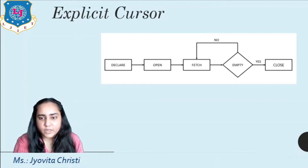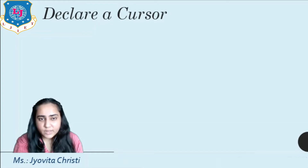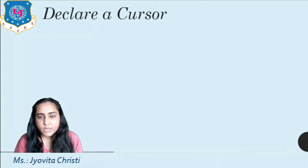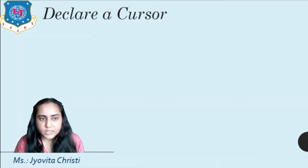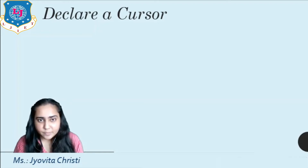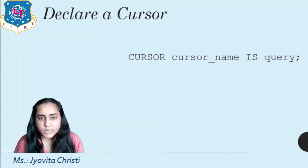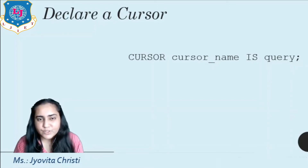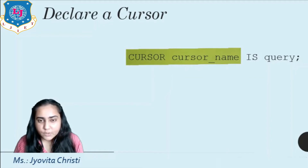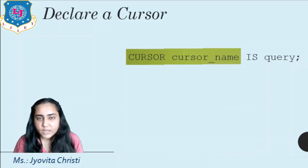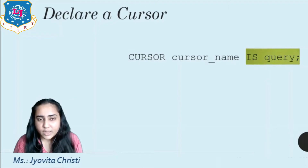Let's examine each step in detail. The first step is to declare a cursor. Before using the explicit cursor you have to declare it in the declaration section of the block. The syntax is: the CURSOR keyword — which specifies this block is going to be a cursor, just like you would specify PROCEDURE or FUNCTION — then you name the cursor, then the IS keyword, and after that you specify the query you want to run as a cursor.